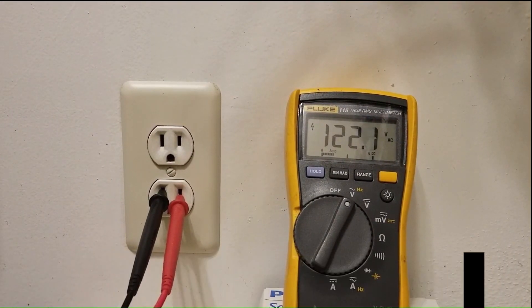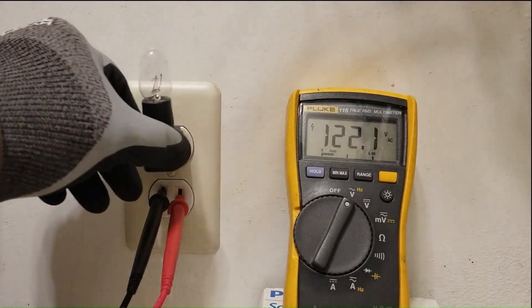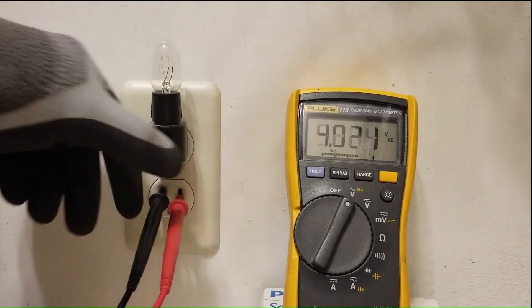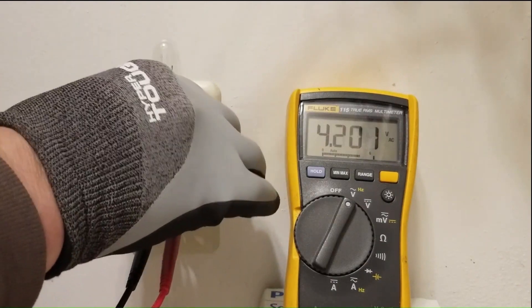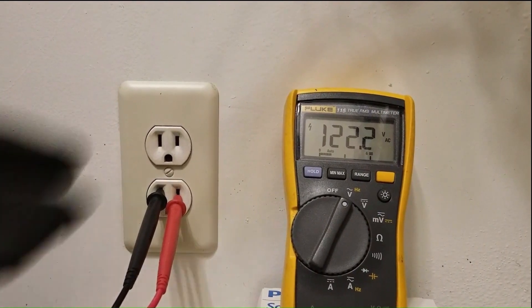Remember, when I measured the voltage at the outlet with a traditional voltmeter, it read 122 volts. This is why the outlet tester deemed it functional—it had no way of knowing otherwise. However, when I plugged in the light bulb, it dropped down to just four volts.